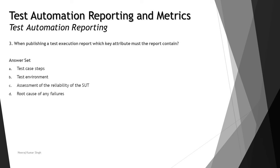The last question from this chapter: when publishing a test execution report, which key attribute must the report contain? Advanced level syllabus questions can be scenario-based or straightforward but complicated, so pay close attention. The options are: A — test case steps, B — test environment, C — assessment of reliability of the SUT, and D — root cause of any failure.